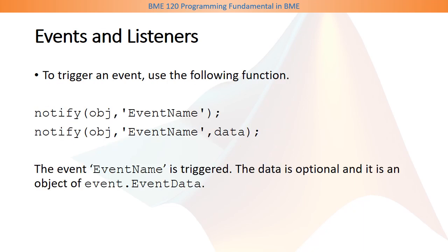The data object of the event source must trigger an event using the notify function. It is a method. The notify function will use the data object as the first input and then the event name in the form of a character vector. You can also have optional data in the notify function so that it can be received at the listener.